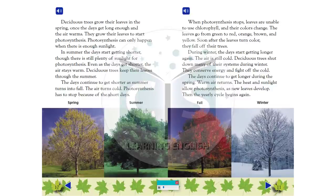Deciduous trees grow their leaves in the spring once the days get long enough and the air warms. They grow their leaves to start photosynthesis. Photosynthesis can only happen when there is enough sunlight. In summer, the days start getting shorter, though there is still plenty of sunlight for photosynthesis. Even as the days get shorter, the air stays warm. Deciduous trees keep their leaves through the summer.